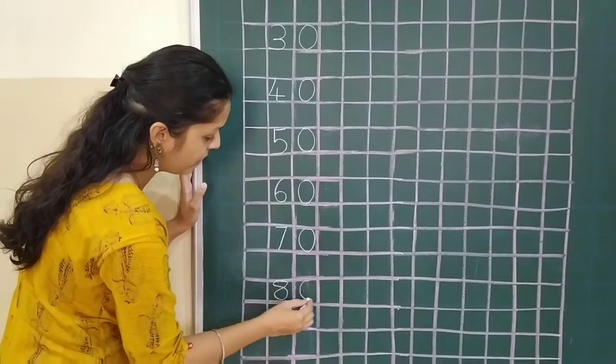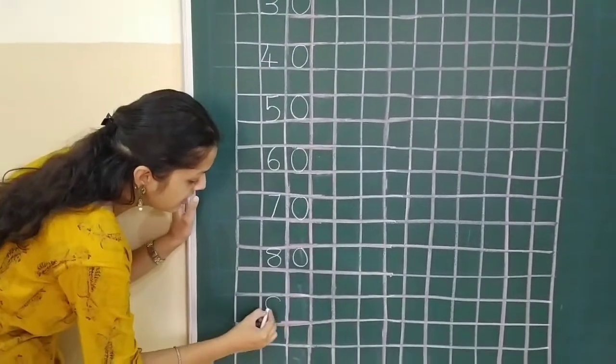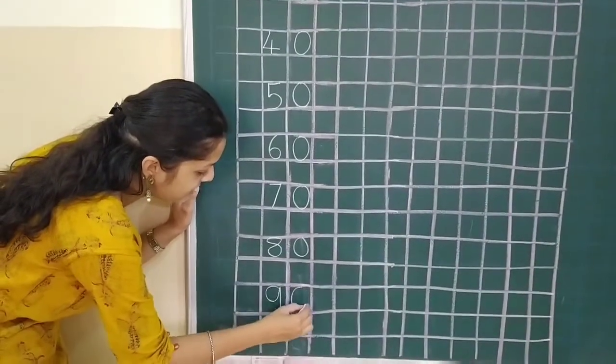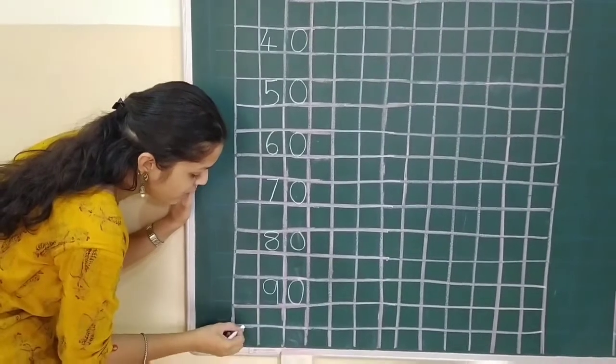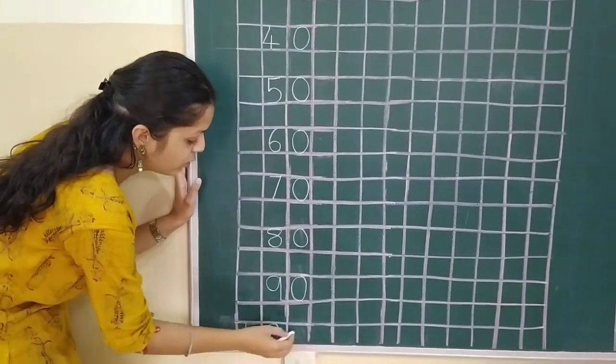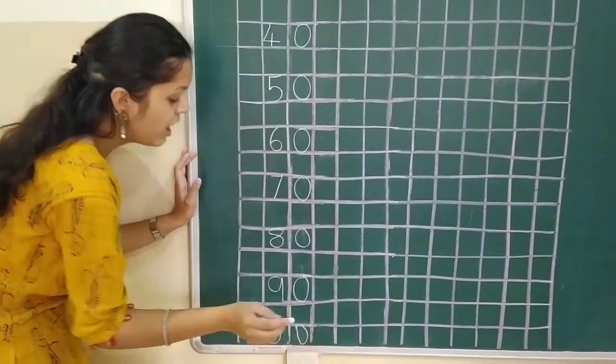Eight, zero, eighty. Nine, zero, ninety. And one, zero, zero, hundred.